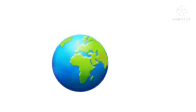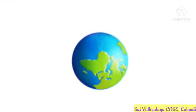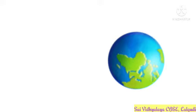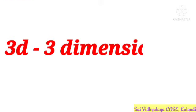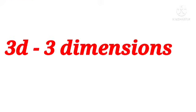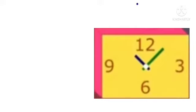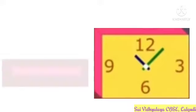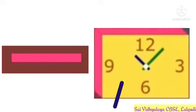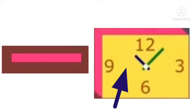We live in a 3D world. All the objects around us are 3D. 3D means 3 dimensions. For example, when we look from the top, the clock looks like a rectangle. But when we look from the front, we can see a clock.